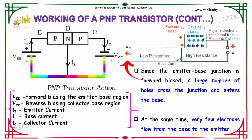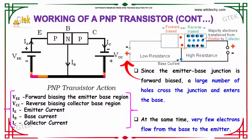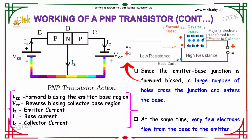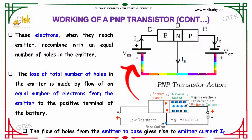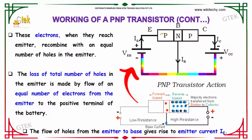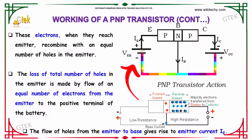Since the emitter-base junction is forward biased, a large number of holes cross the junction and enter the base. At the same time, very few electrons flow from the base to the emitter. These electrons, when they reach the emitter, recombine with an equal number of holes in the emitter. The loss of holes in the emitter is made up by the flow of an equal number of electrons from the emitter to the positive terminal of the battery.